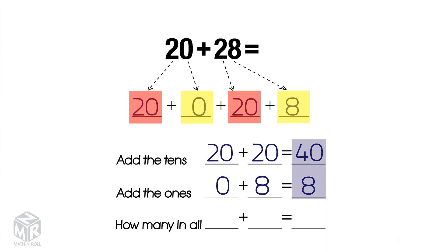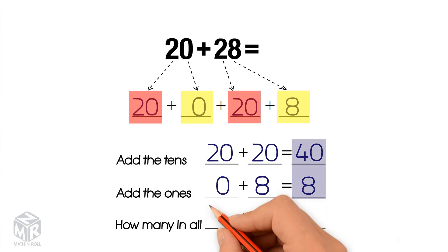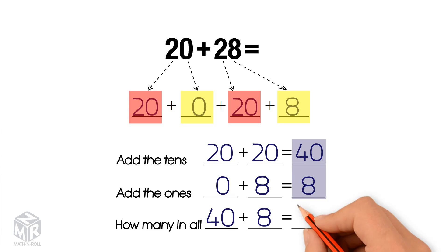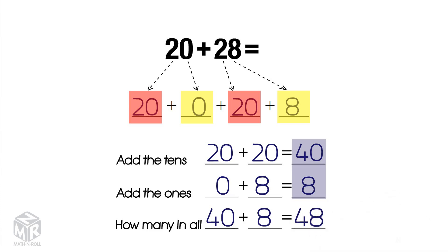Finally, we add them together: 40 plus 8 equals 48. So 20 plus 28 equals 48.